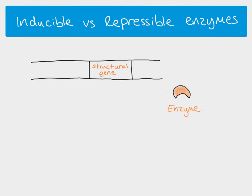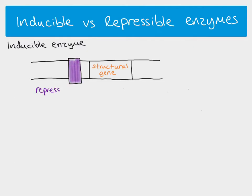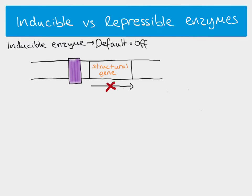The cell will only want to produce an enzyme if it's actually needed. Looking at inducible enzymes: the repressor protein is currently bound to the DNA, which means transcription of the structural gene will not take place. The default state of an inducible enzyme is OFF — the gene coding for that inducible enzyme is normally not transcribed, so the inducible enzyme is not produced, because the repressive protein is usually bound to the DNA.